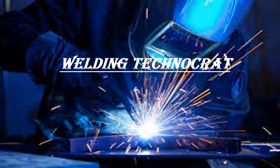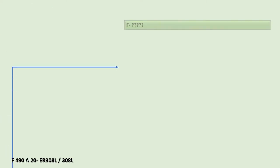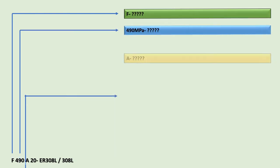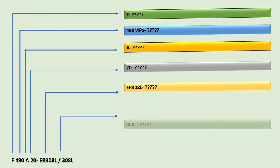Welcome to the Welding Technocrat YouTube channel. Let us now understand the newly added SFA number 5.39, a specification of flux and electrode combinations for SAW and ASW joining and surfacing of stainless steel and nickel alloys. Here you can see the designator for SAW flux electrode combination. By the end of this video, we'll be able to understand and decipher the designator constituting the flux electrode classification.